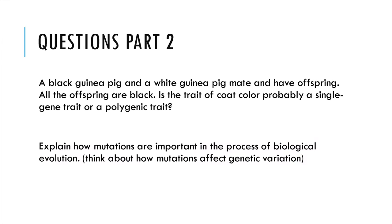Questions part two: a black guinea pig and a white guinea pig may have offspring that are all black. Is coat color probably a single gene trait or a polygenic trait, and why? Also explain how mutations are important in the process of biological evolution — think about how mutations affect genetic variation. I need a couple of sentences for each question.